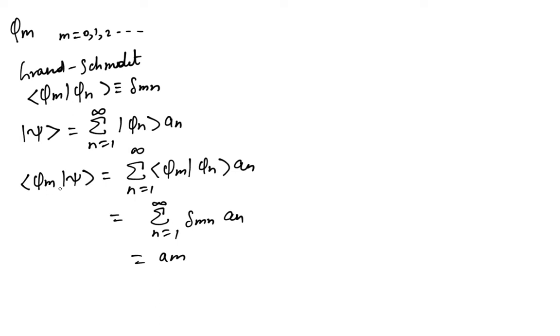Moreover, the norm of psi can be written as n equals 1—here I am using 0, so let's remove 0 here—it's just 1 to infinity, and this is squared. This can be written as phi N, psi squared, which basically means it's a sum of coefficient squares.